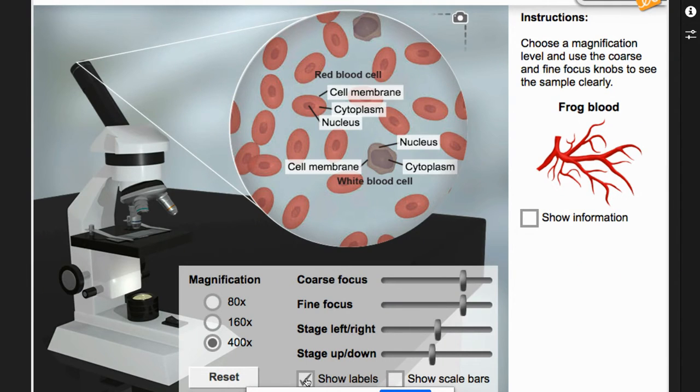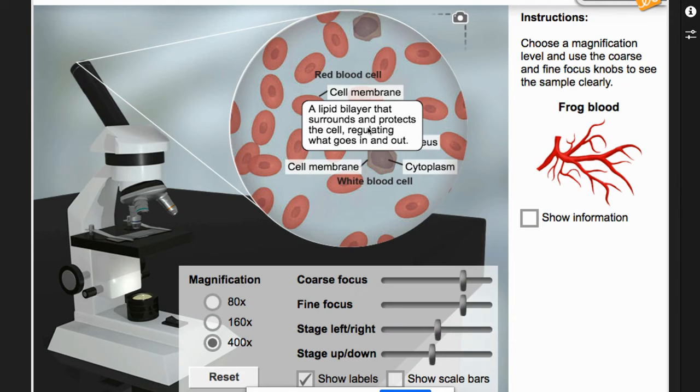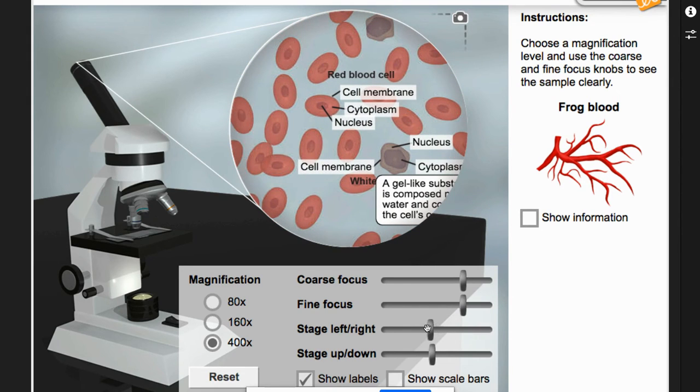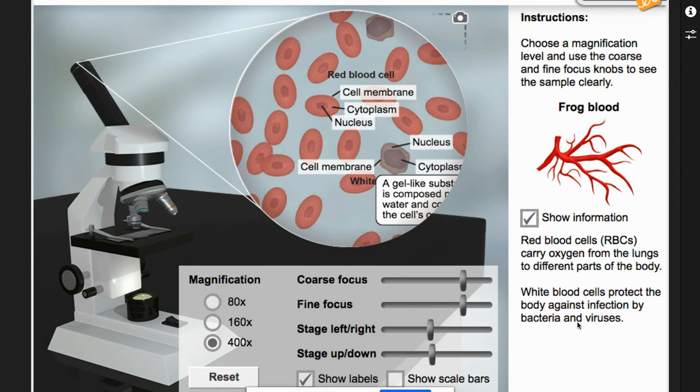You can click on Show Labels. You can click Show Scale Bars, but it doesn't really mean anything yet to you, so we'll talk about that in class. But the Show Labels is really important here because you're going to see all of the parts of the blood cells. So you'll see that we have a white blood cell and a red blood cell. You should recognize some of those things. If you want to click on the cell membrane, it will tell you what its job is. If you cannot read some of it, just move and you'll be able to see it. Over here, click on Show Information. This is really cool because this explains what the red blood cells do and what the white blood cells do.